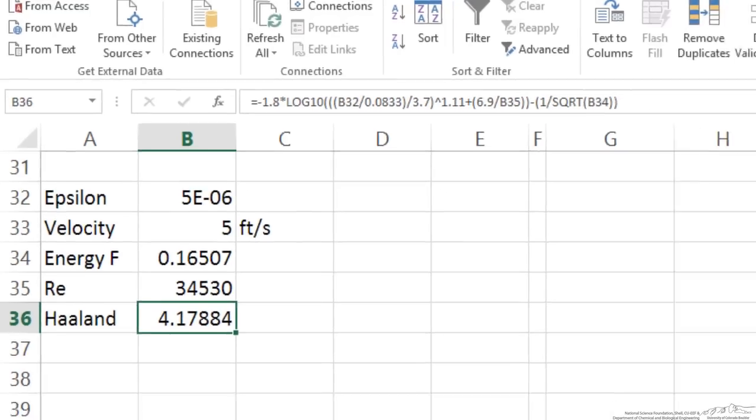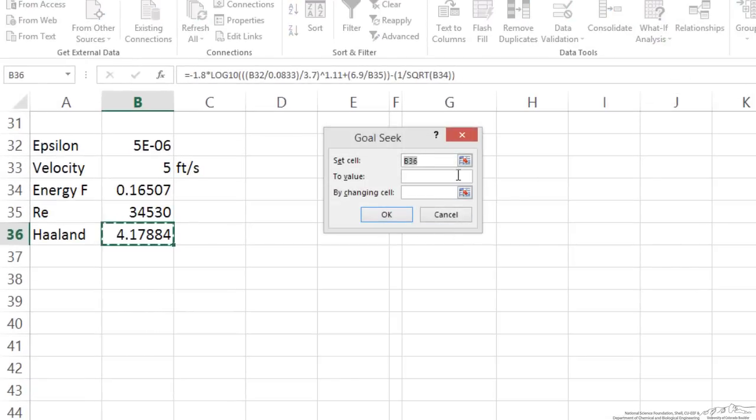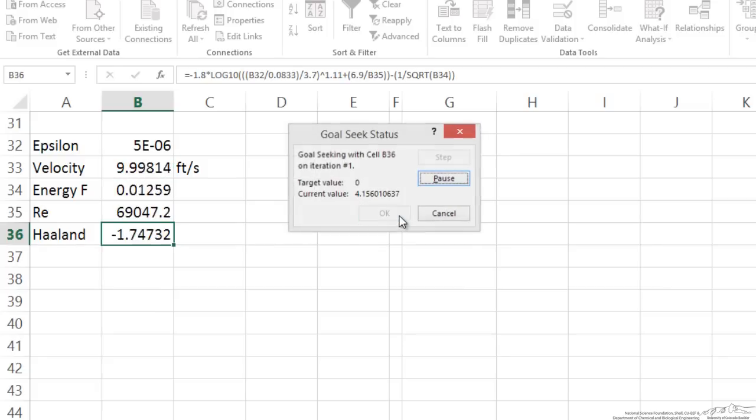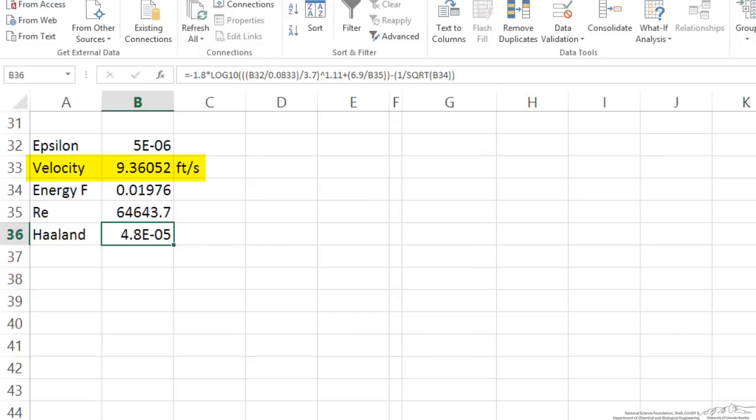So now what I do is the what if analysis and I do goal seek. I want to set this value to 0 because it should be satisfied by changing the velocity. When I do this I find that my velocity is 9.36 feet per second.